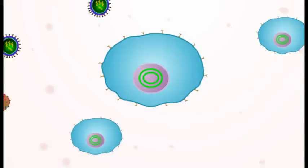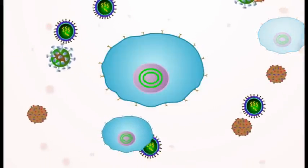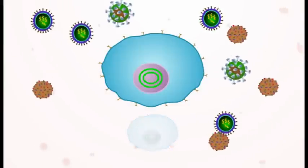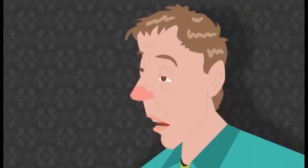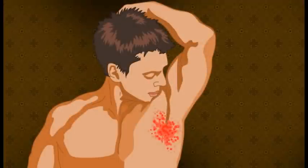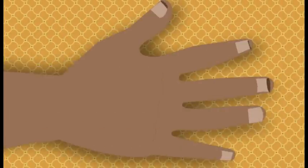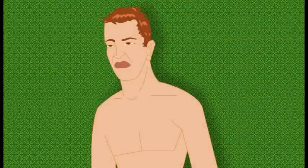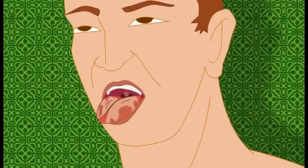The number of CD4 cells is now so low that other germs that cause infections find it easier to invade the body. This makes flus, coughs and colds, skin rashes, shingles, fungal nail infections, and mouth sores become more common in this stage.